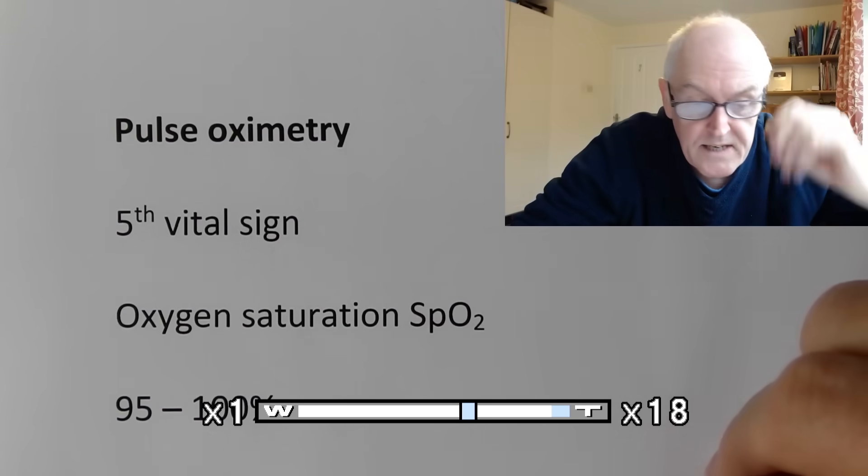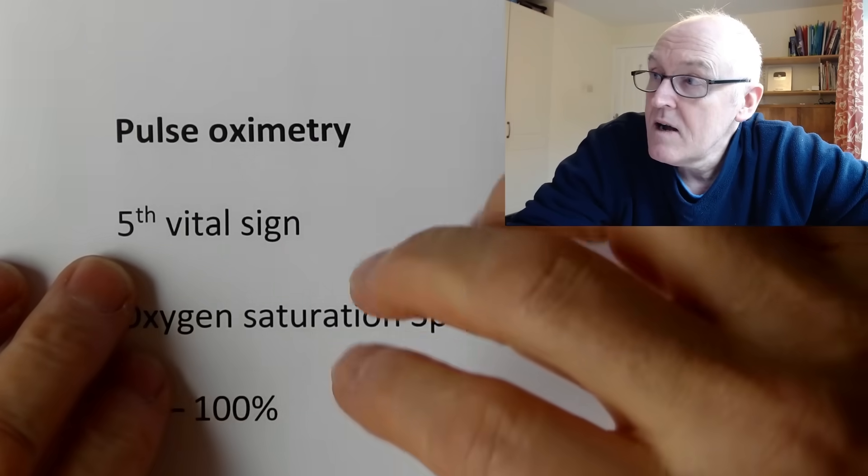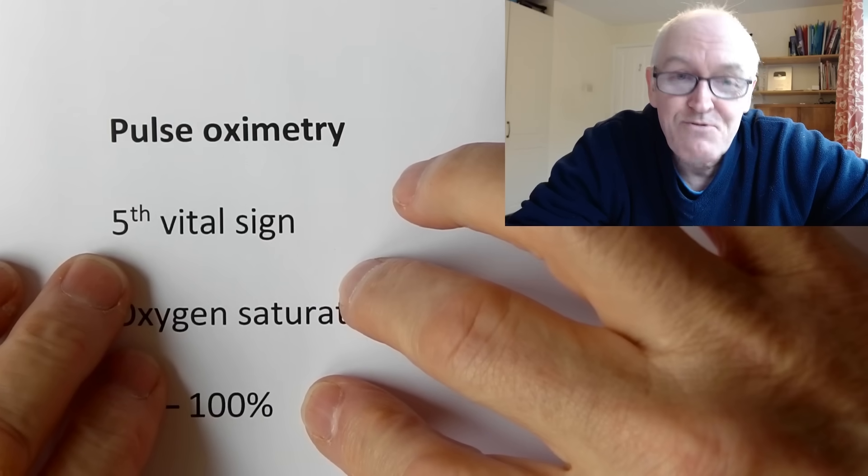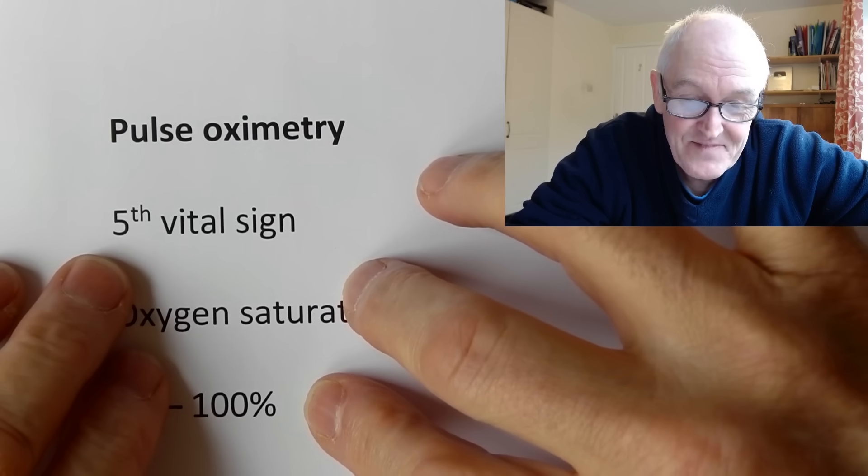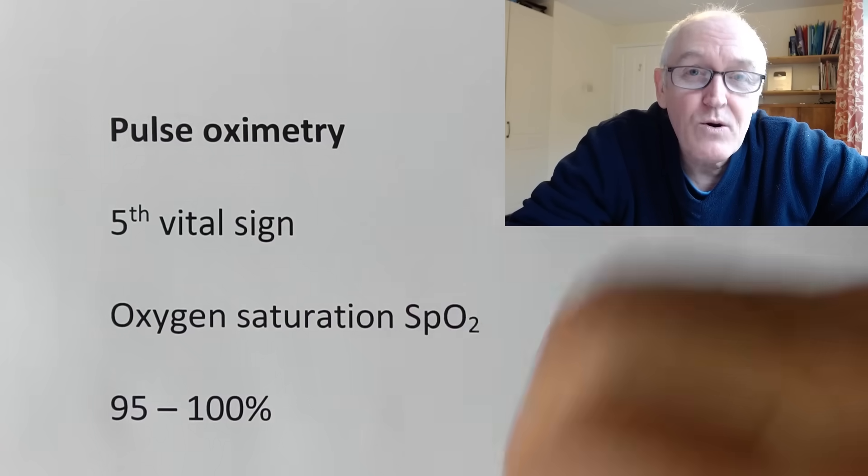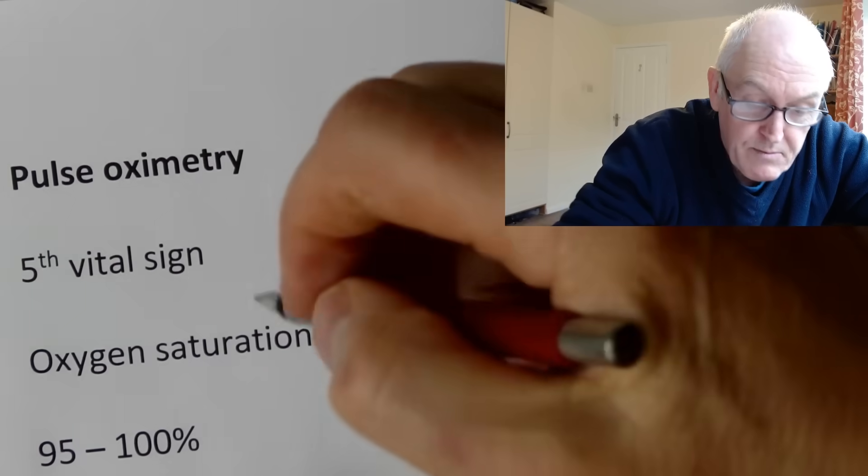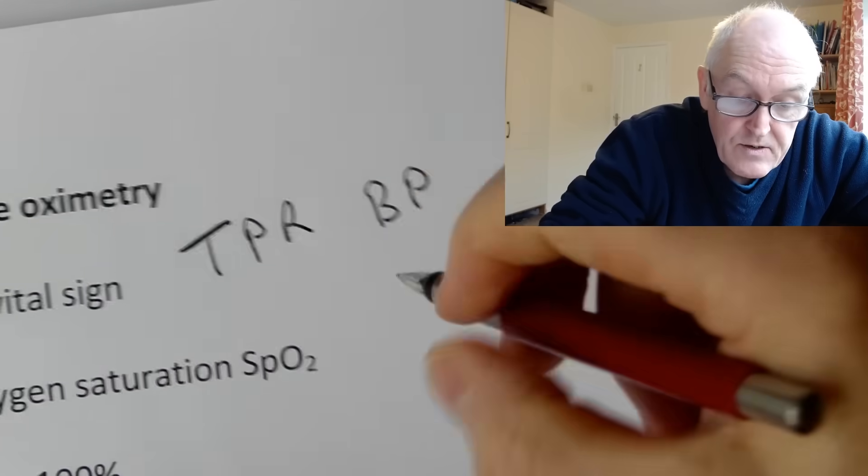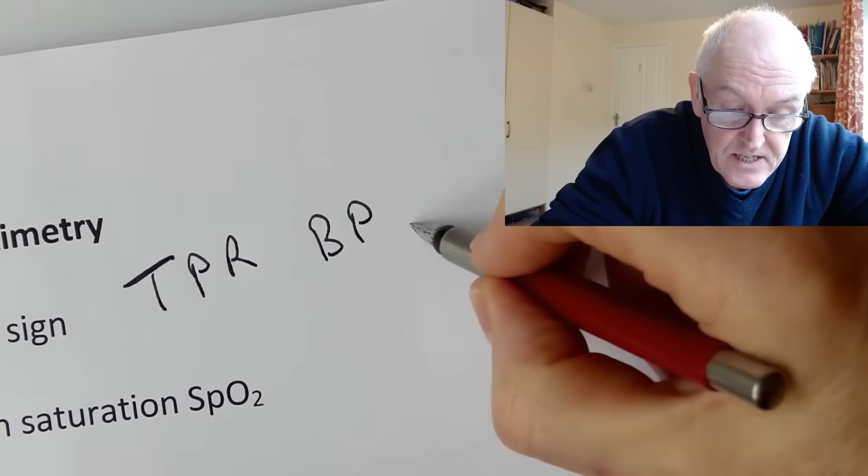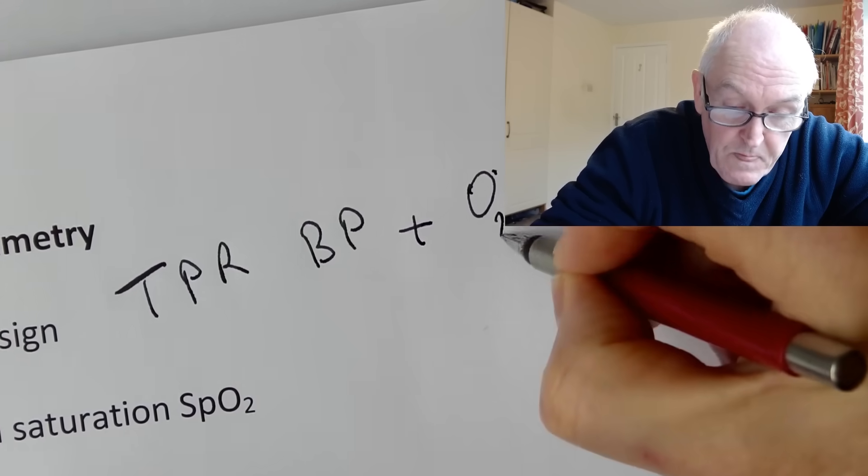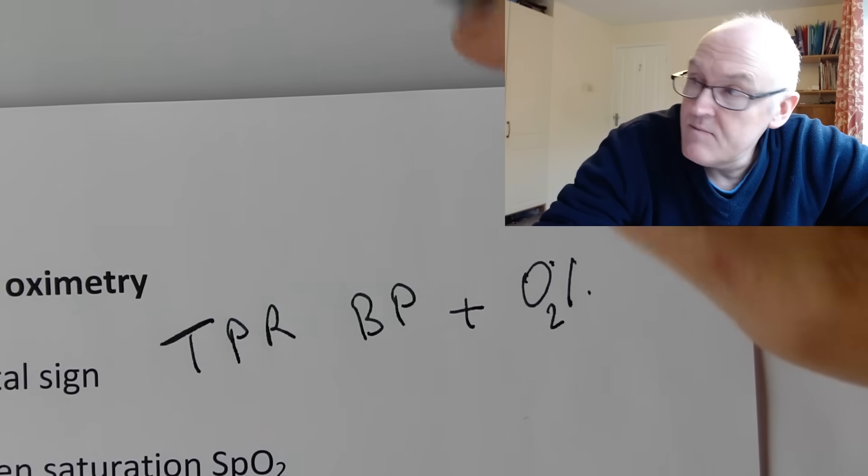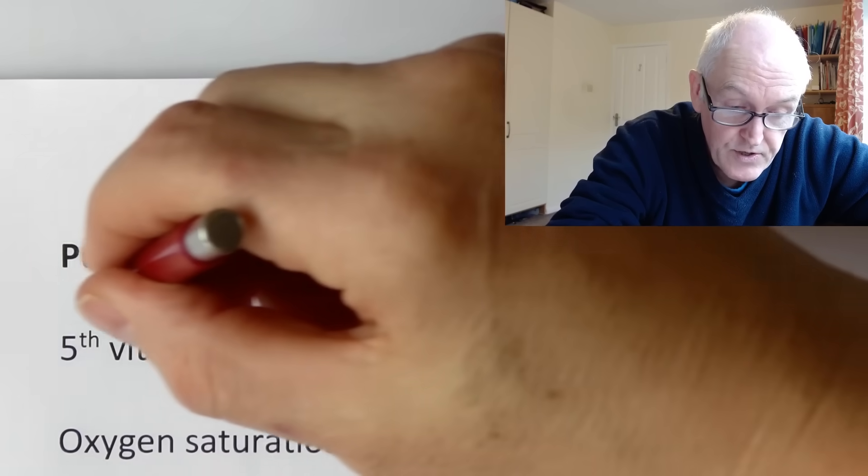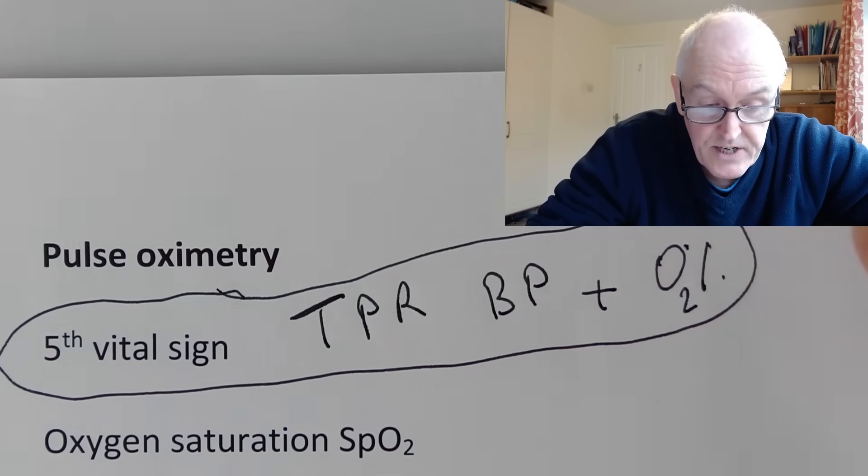The other vital signs, the first four, are heart rate, blood pressure, respiratory rate, and temperature. We call this TPRBP - temperature, pulse, respiration, blood pressure. Now we're adding oxygen saturations. Anytime you come into hospital now, we're going to do these to you virtually as soon as you get through the door to get that basic physiological information.